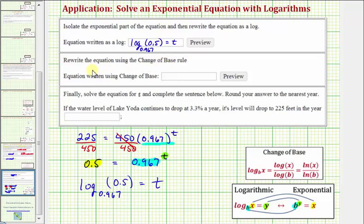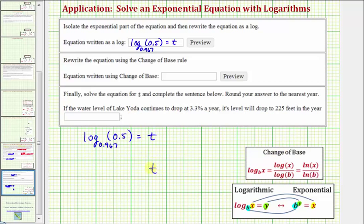And now we're asked to rewrite the equation using the change of base formula given here below, and we'll use the common log, which means t is equal to the common log of the number 0.5 divided by the common log of the base 0.967. And again, we do want to enter the entire equation, so we have log 0.5 divided by log 0.967. These are both common log equals t.